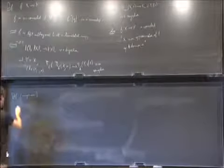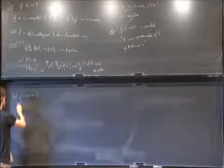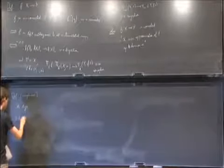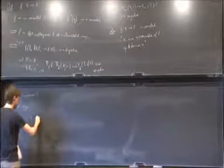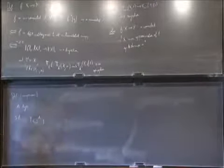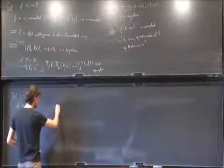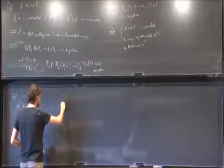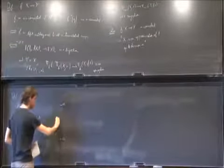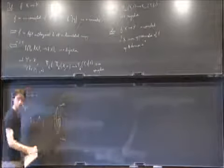The suspension of a space A is defined to be the following pushout: you have two copies of the point 1 and A in the middle. This is the usual suspension — you have the north pole, the south pole, and then for every point in A, you have a path from the north pole to the south pole.